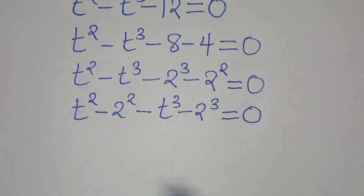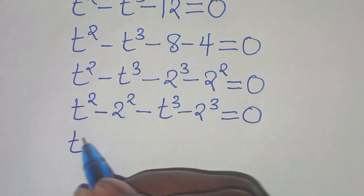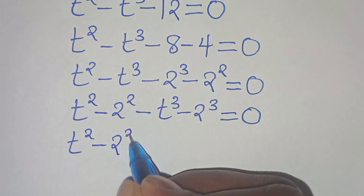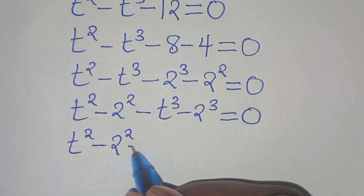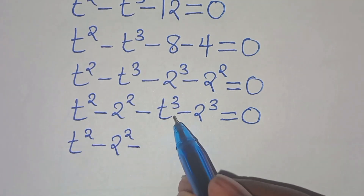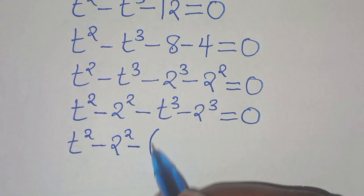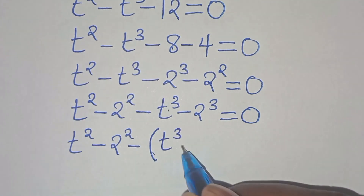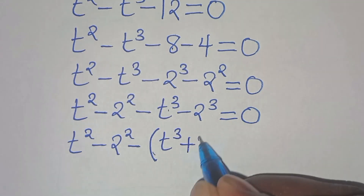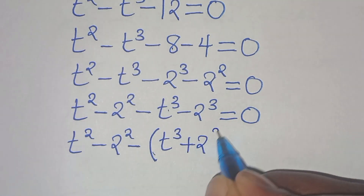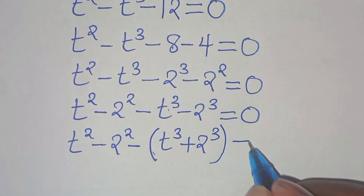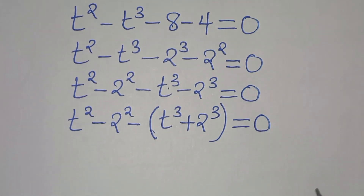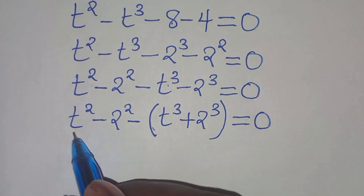The next step is: we have t to the power of 2 minus 2 to the power of 2, subtract — now this is the same thing as — in parentheses t to the power of 3 plus 2 to the power of 3. This equals 0.